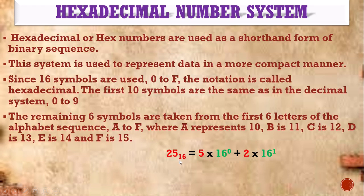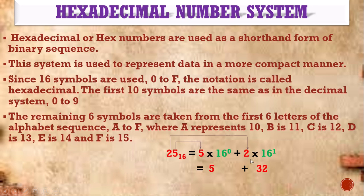For example, hexadecimal number 25 (base 16): 5 × 16⁰ + 2 × 16¹. 16⁰ = 1, so 1 × 5 = 5. 16¹ = 16, so 16 × 2 = 32. Adding: 5 + 32 = 37. So the decimal value is 37 (base 10), while 25 is the hexadecimal value. By looking at the base value 16, we can identify it as a hexadecimal number. To convert hexadecimal to decimal, multiply each digit by 16 to the power of its positional value.